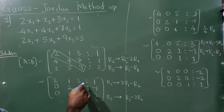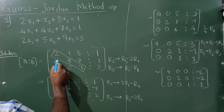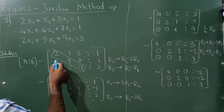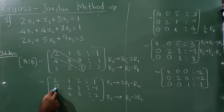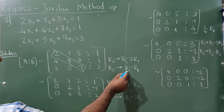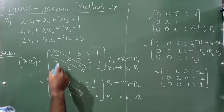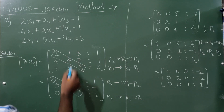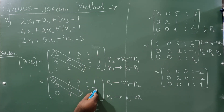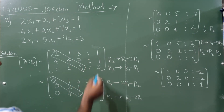Keep row 1 as it is. For row 2, make the first element 0: R2 becomes R2 - 2·R1, so 4 - 4 = 0. For row 3, R3 becomes R3 - R1, so 2 - 2 = 0. The remaining elements: 4 - 2 = 2; 7 - 6 = 1; 1 - 2 = -1; and 5 - 1 = 4; 9 - 3 = 6; 3 - 1 = 2.